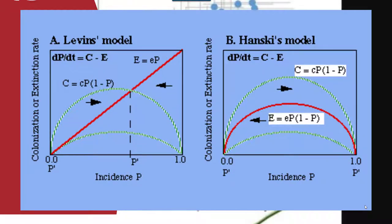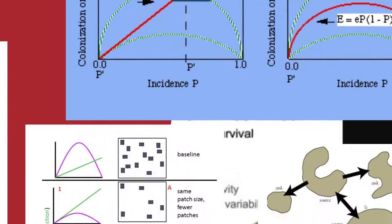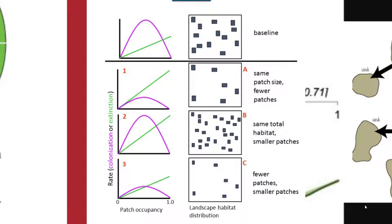There are historical models by Levins and Hanski which represent the occurrence of an organism and factor in a colonization or extinction rate. We can look at these simple models by viewing how differences in patch size or habitat distribution — such as squares A, B, and C — can influence the rate of colonization or extinction. The same total habitat with smaller patches can result in larger colonization rates and relatively moderate levels of extinction, as compared to panel A with fewer patches, or panel C with fewer and smaller patches.